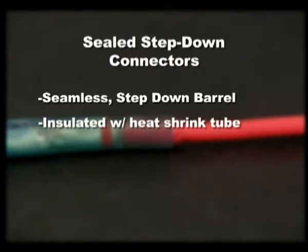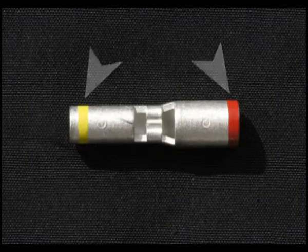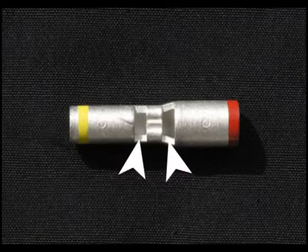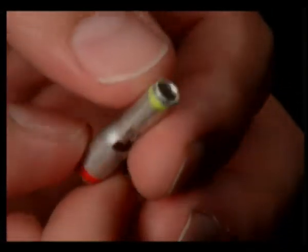The connector has indicators to ensure the barrel is crimped in the proper location, colored stripes on either end to indicate the wire size and crimp die, a window for inspection to ensure the wires are properly seated, a wire stop to prevent over-insertion, and a uniform copper wall for a sound mechanical crimp.